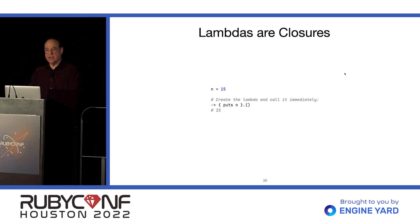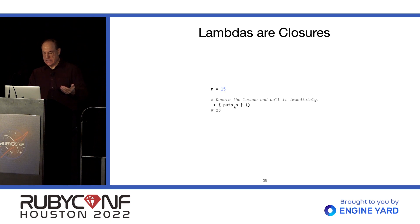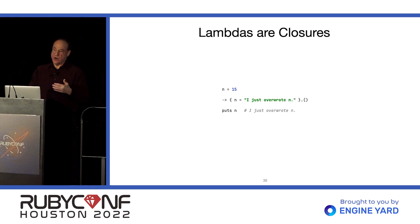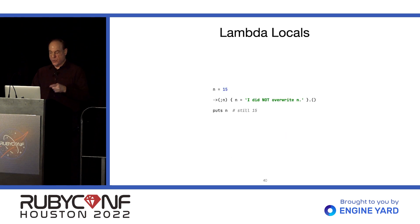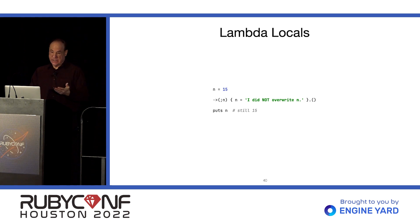Lambdas are closures — they carry with them the context of the scope in which they were defined. So if there's a local variable n which is 15, we can output it. We could pass this to somewhere else in the program and it would still work. Fortunately or unfortunately, you could also modify those values — but if that is a problem, you can tell Ruby that you want the n variable to be a local lambda variable and not use the enclosing scope.